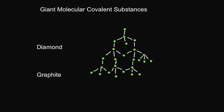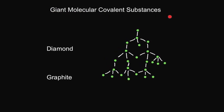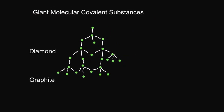As well as simple molecular covalent substances, we also get giant molecular covalent substances. These are molecules where every atom is joined to another atom by covalent bonds, forming these huge structures. One example is diamond, which is made from carbon. Every carbon atom depicted here in green is attached to four other carbons by a strong covalent bond, and there are literally millions and millions of these. This is very different from simple molecular substances like water, which has just two covalent bonds. Giant molecular covalent substances are always solids, have very high melting points, and are generally very insoluble in water.